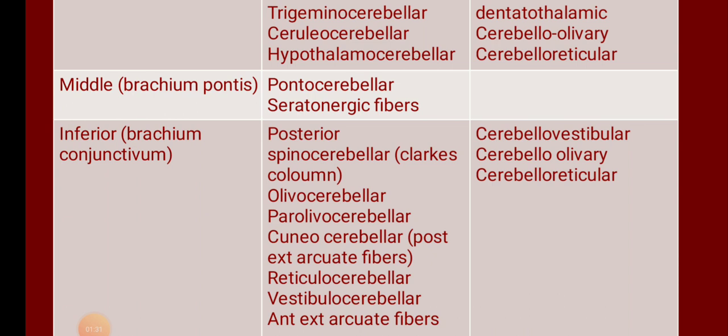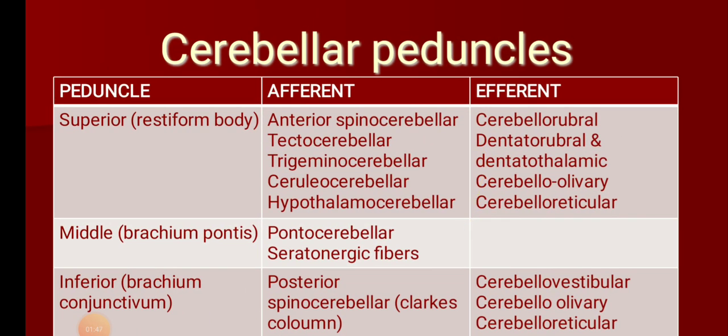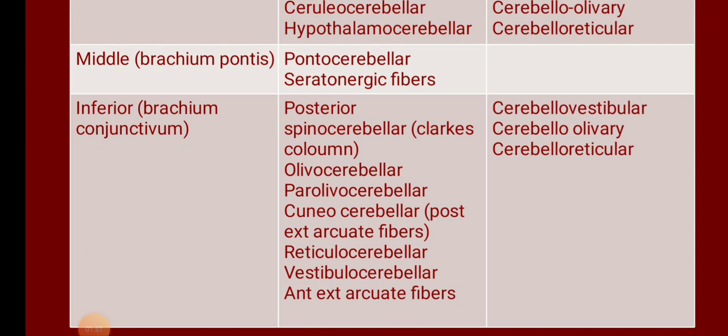It is easy to remember once you focus on certain points. Think of the inferior cerebellar peduncle connecting the medulla to the cerebellum. Both afferent and efferent fibers pass through it. For the afferent fibers passing from medulla to cerebellum, always remember that the posterior spinocerebellar tract — otherwise termed Clark's column sensation — passes through the inferior cerebellar peduncle. Also remember that the anterior spinocerebellar tract passes through the superior cerebellar peduncle.